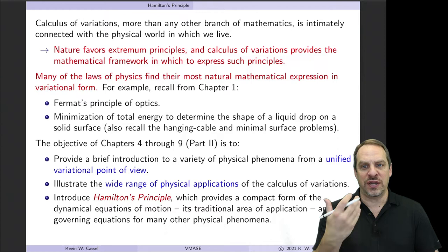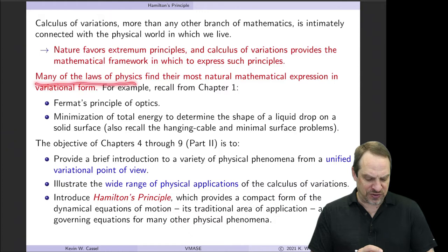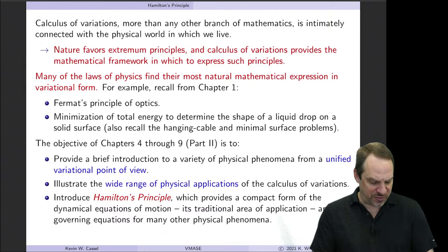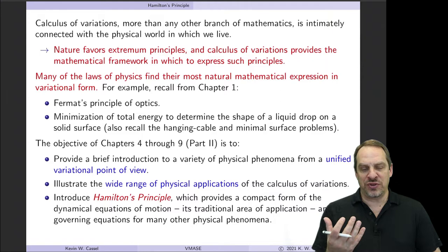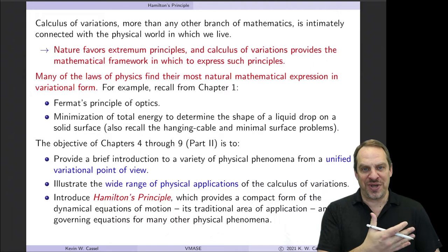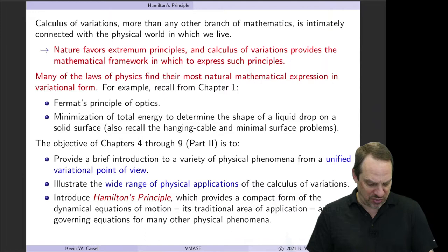We experienced some hints of this in Chapter 1, where we saw that many of the laws of physics find their most natural mathematical expression in the calculus of variations. We looked at Fermat's principle of optics, we looked at minimization of total energy of a liquid drop. In both of those cases, the physical principle, which was stated in words, was most naturally expressed mathematically in a variational form. And this is very common — we're going to see much more of this in Part 2 of the book.